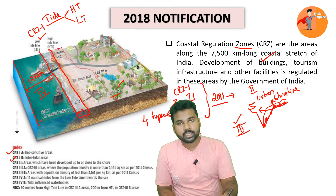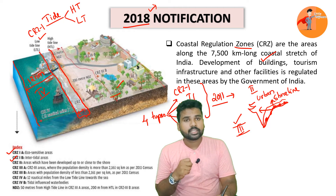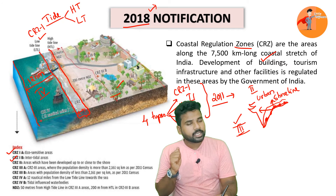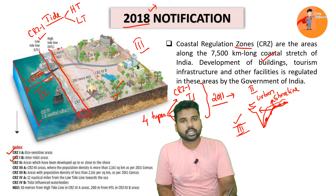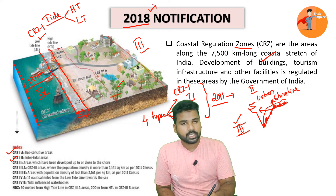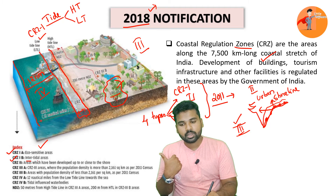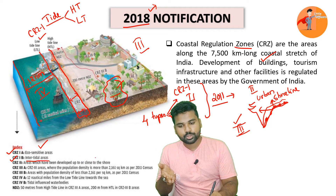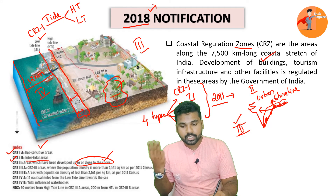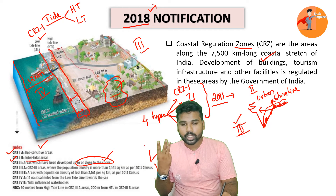That was the earlier 2011 definition. In 2018, the government issued a new notification which has been criticised for diluting the regulations, particularly with respect to Category 3. The other categories are broadly similar and have not been significantly diluted. Under the 2018 notification, CRZ1 Category A remains eco-sensitive areas, Category B remains the intertidal region. CRZ2 remains developed urban areas close to the shoreline. The significant change is in CRZ3, which has now been divided into two sub-categories, A and B.